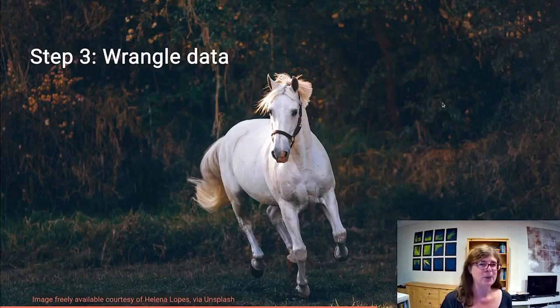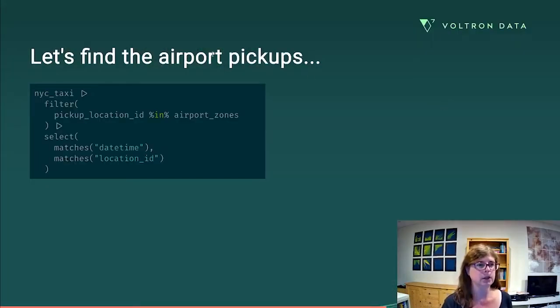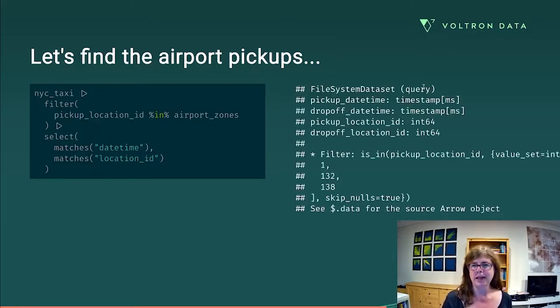Well, let's go do that. So here's what we've got. First off, let's find the airport pickups. We can again filter and select. So the first off we filter. So we're going to say, find me all those taxi rides where the pickup location ID belongs to one of those three airport zones. Then what I'm going to do is just select those variables I care about. I could use the same select statement I used last time. But I'm trying to prune down the number of variables I returned. So I'm finding that something that matches either date time or location ID will be sufficient for my purposes.